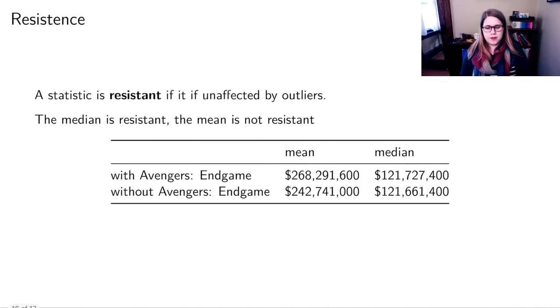And then I'd like us to think about the idea of resistance. So a statistic is resistant if it is not affected by outliers. So the median is resistant, but the mean is not. So if I do these statistics with Avengers Endgame in there, the mean is $268 million. And the median is almost $122 million. But if I take out Avengers Endgame, just that one movie from 2019, now the mean is down to $243 million. But the median is still basically $122 million. So the median doesn't change very much based on the outliers.